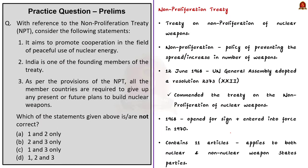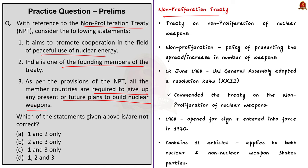Our next topic is the Nuclear Non-Proliferation Treaty. With reference to the NPT, consider these statements: it aims to promote cooperation in the peaceful use of nuclear energy; India is one of the founding members; as per the provisions of NPT, all member countries are required to give up any present or future plans to build nuclear weapons. NPT refers to the Treaty on the Non-Proliferation of Nuclear Weapons. Non-proliferation refers to the policy of preventing the spread or increase in the number of weapons.